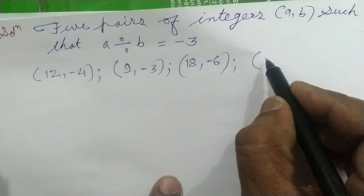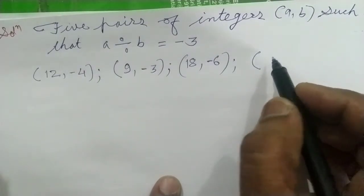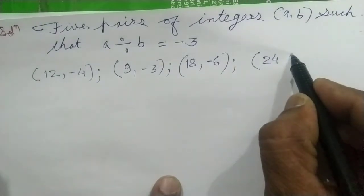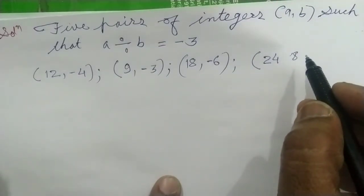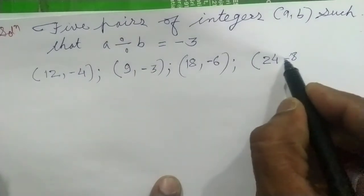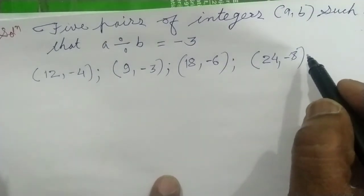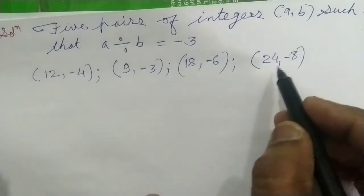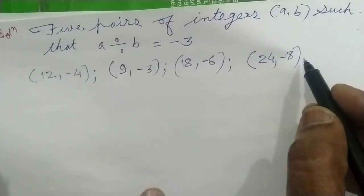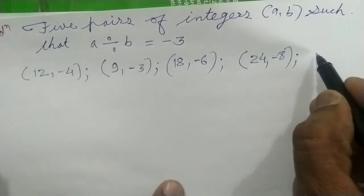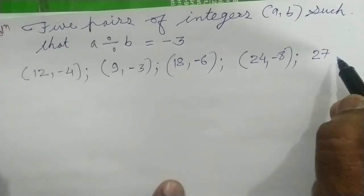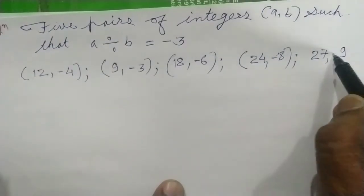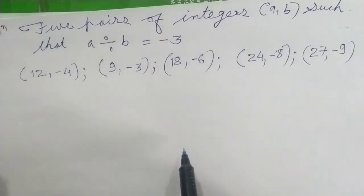कोई भी pair ले सकते हैं पर ध्यान रहे A, 3 से divisible होना चाहिए। चौथा pair: A = 24, B = −8। पाँचवाँ pair: 27 ले लिया — 27 को 9 से divide करो तो 3 आता है — तो A = 27, B = −9। Sign minus कर देंगे। इस प्रकार से 5 pairs आ गए।